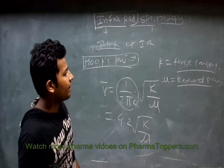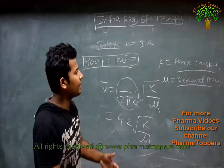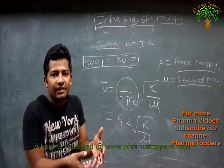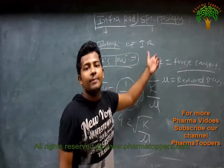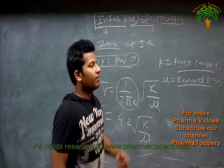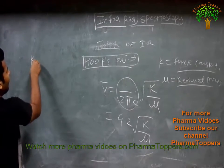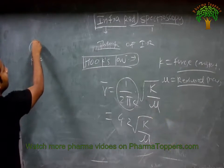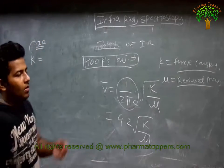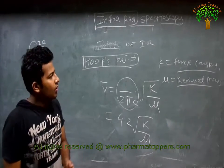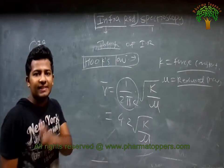What is meant by K? K is nothing but the force constant — basically, how strong the bond is. If the bond is more strong, K will be larger. Let's see how K affects the IR wavenumber. More the bond strength, more will be the value of the force constant K.